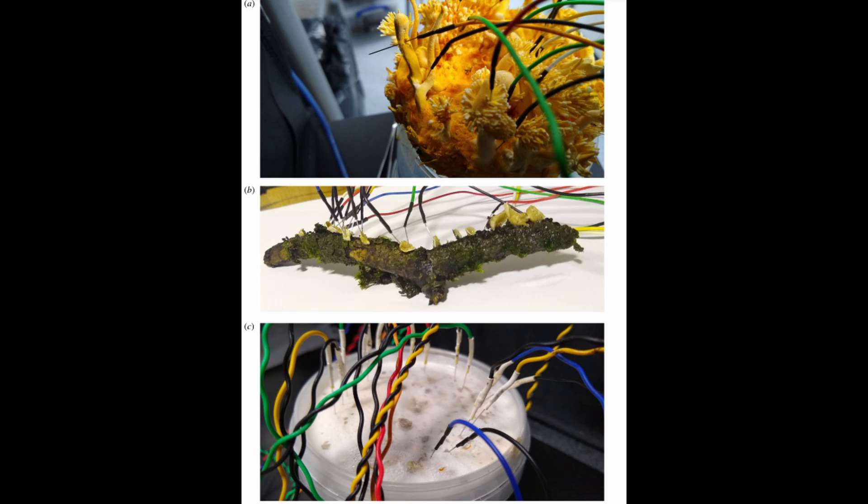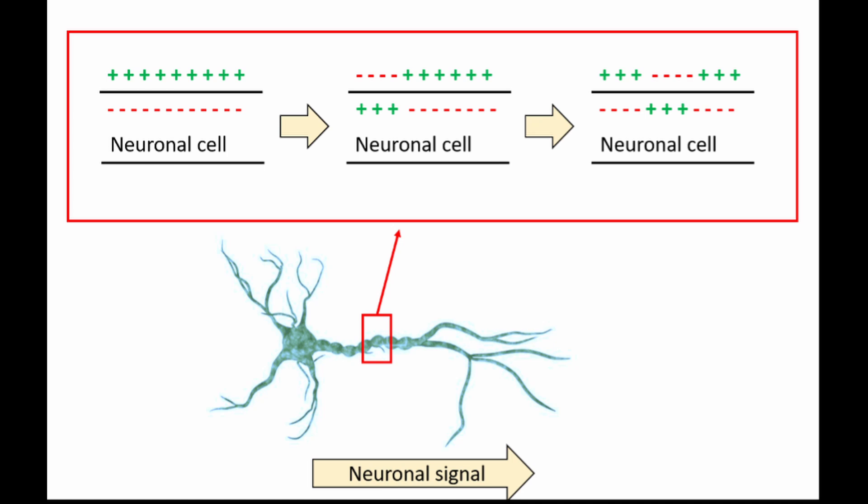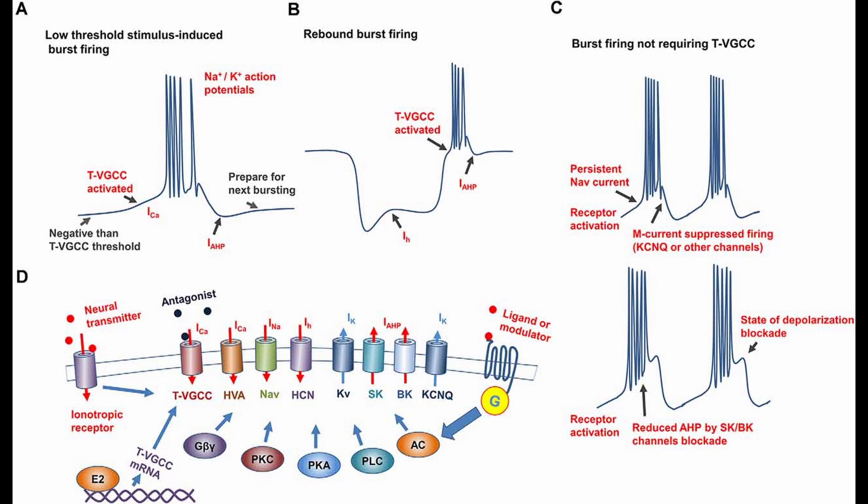Background of fungal communication. Communication in the biological world is a fundamental process that allows organisms to interact with their environment and each other. While we are familiar with communication in animals and plants through chemical signals, visual cues, and sounds, recent studies suggest that fungi might also have sophisticated forms of communication. This communication could be facilitated through electrical spiking activity, which has traditionally been associated with neural activity in animals.